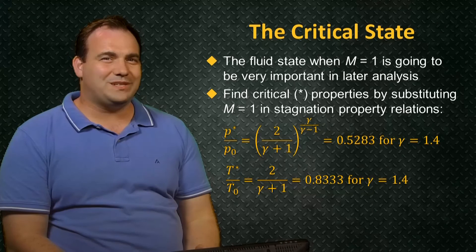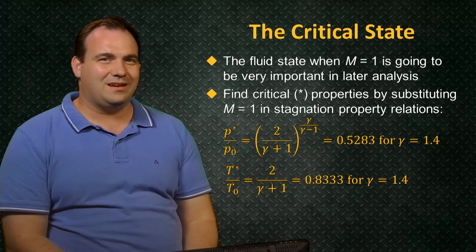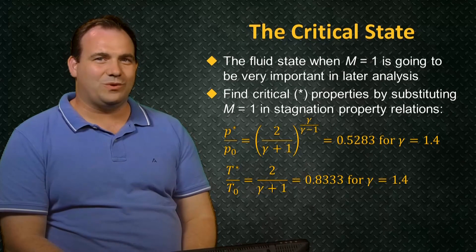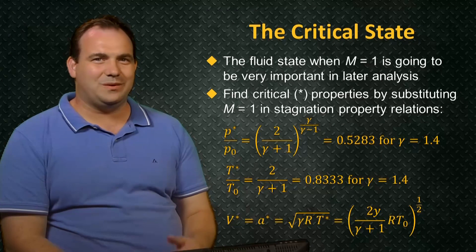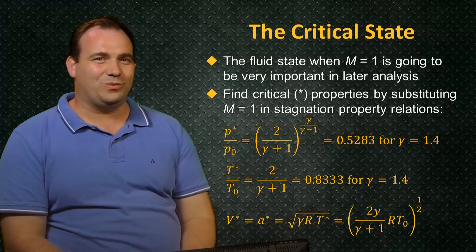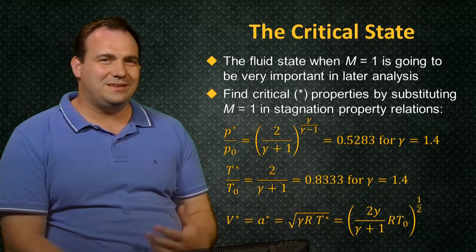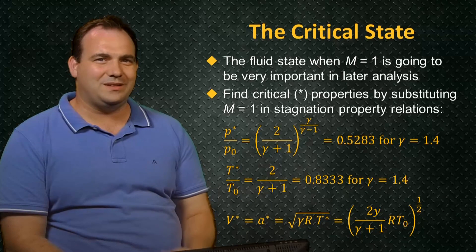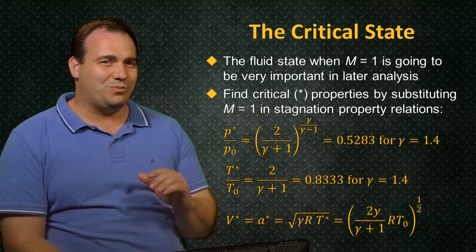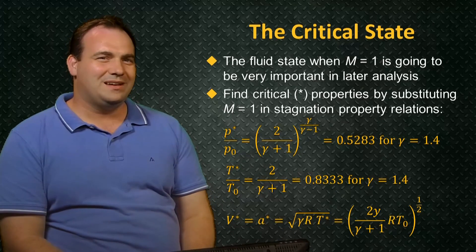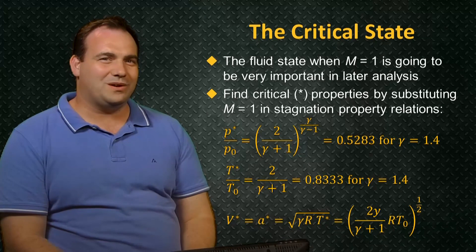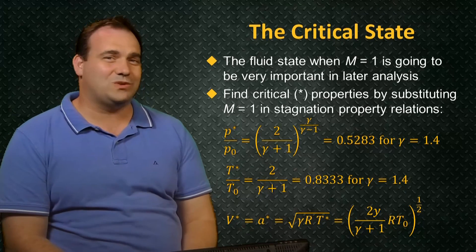The critical temperature is 83% of the stagnation temperature, and this can easily be used to compute the critical velocity, which is equal to the critical sound speed, seen as how the flow Mach number is 1. In the next section, we're going to make use of the critical state and the stagnation properties in the analysis of compressible flow through nozzles, such as the one required to extract thrust from the hot exhaust products exiting from a scramjet combustor.